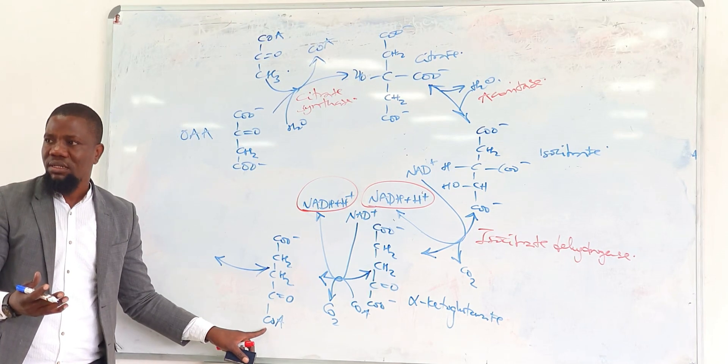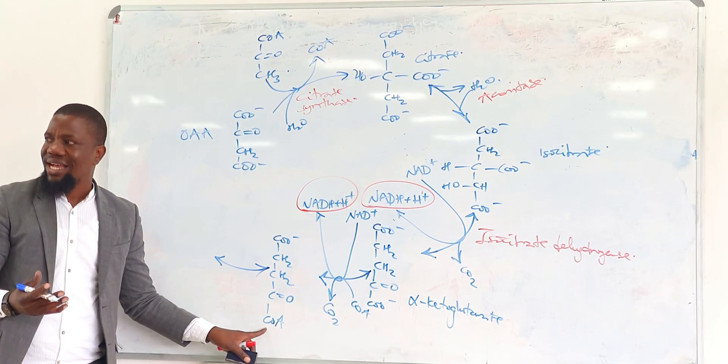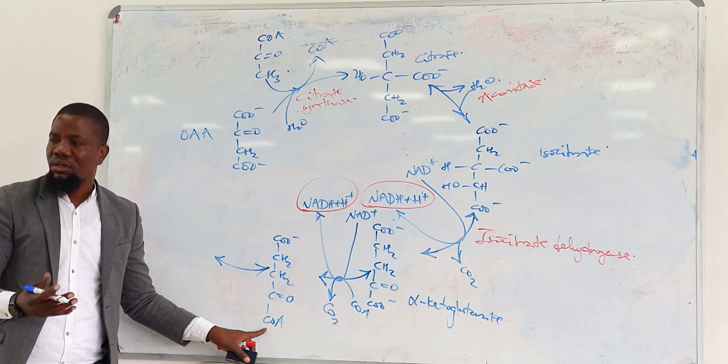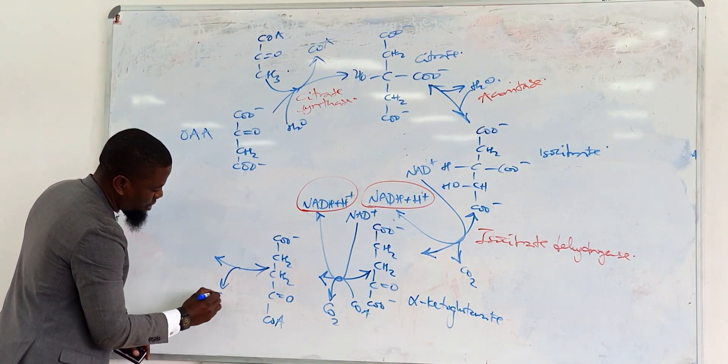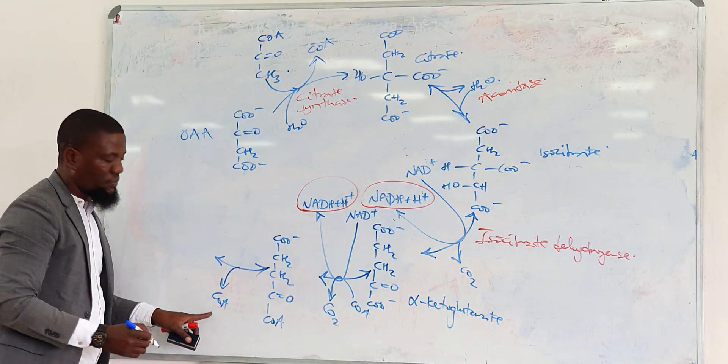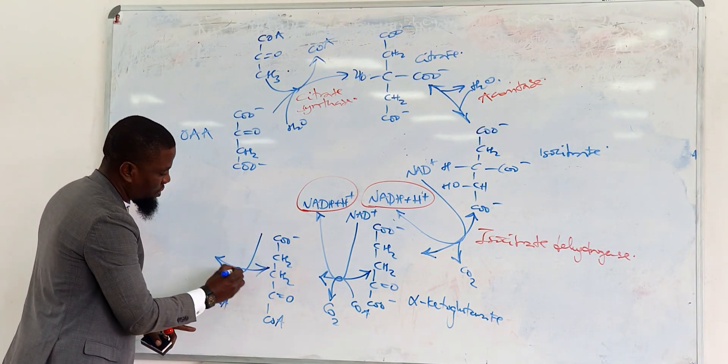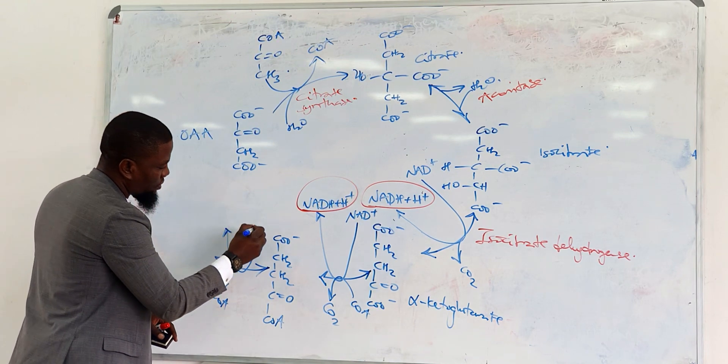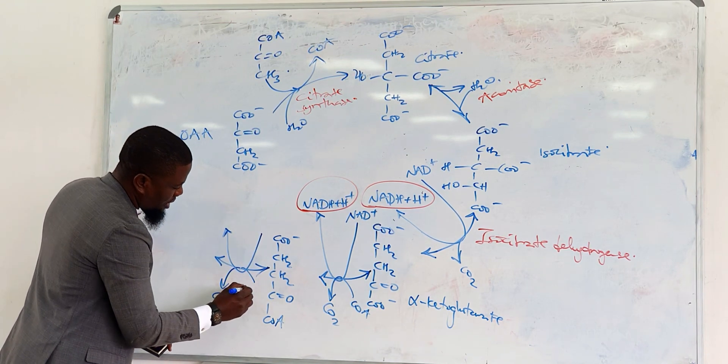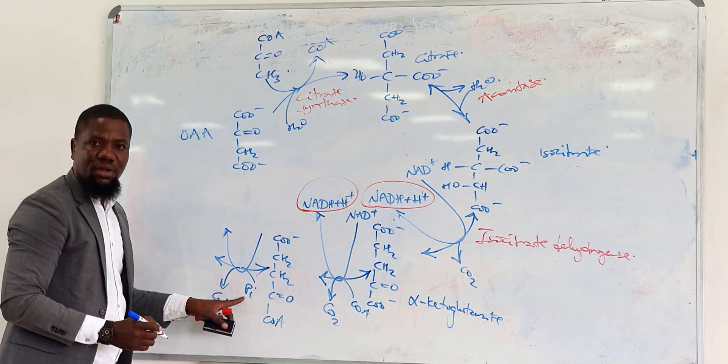Some energy production, right? Remember, it's a high energy molecule. So, as the co-A is coming off, this generates enough energy which will be able to allow addition of phosphate.